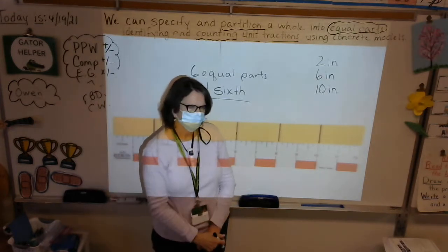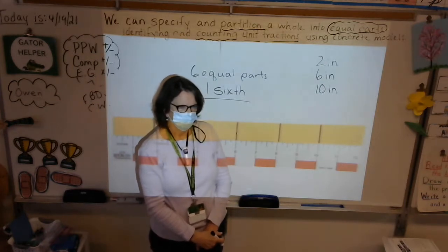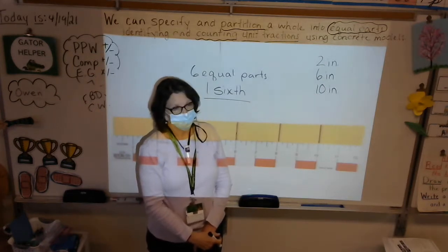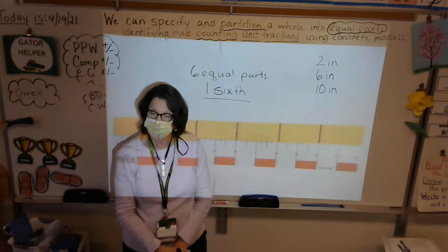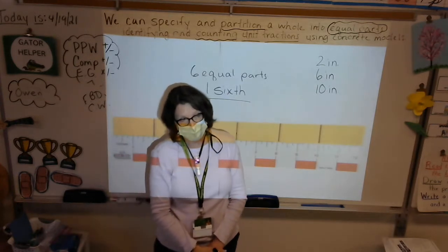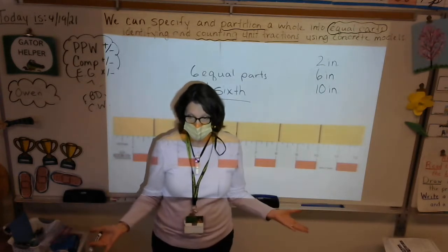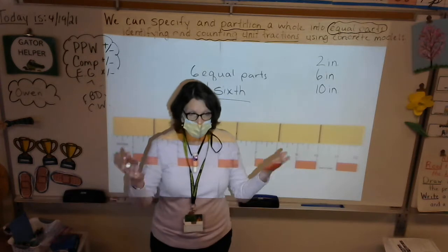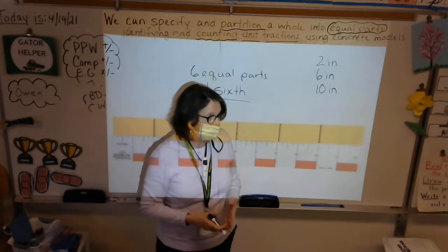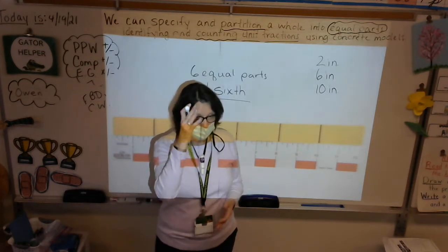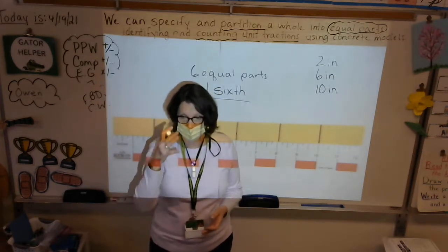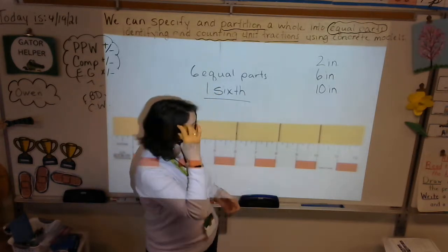You can do fractions with circles too, or squares — a lot of different shapes. If you think about a pizza, if the shop you get your pizza from is precise, you can cut a pizza into equal parts. We've identified how to make halves, fourths, thirds, and sixths.